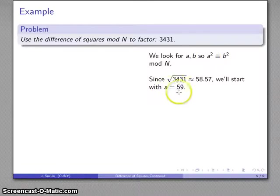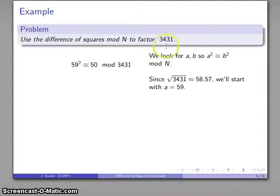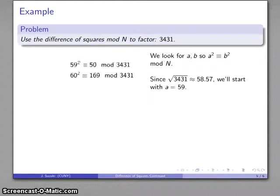On the other hand, if I start with a equals 59, when I square that, it's going to be more than 3431. And it leaves open the possibility it might be the square of a different number. So, we'll try that 59 squared is congruent to 50 mod 3431, not obviously the square of a number. So, we'll go on to the next. And, 169, that is, obviously, the square of a number, 13.